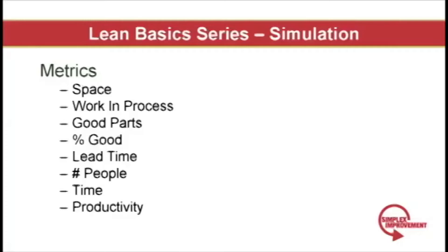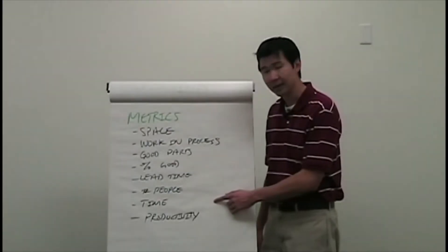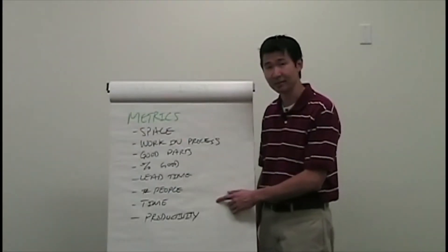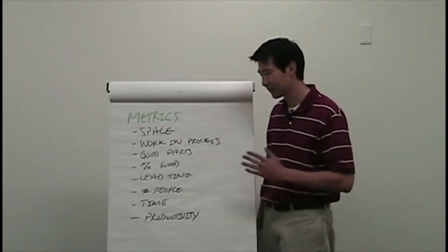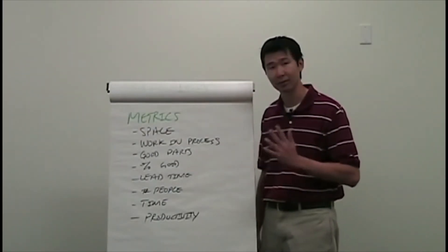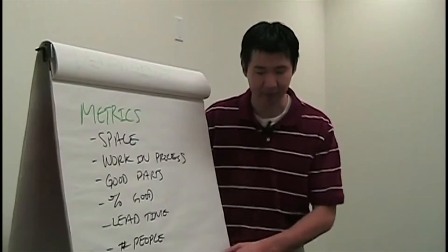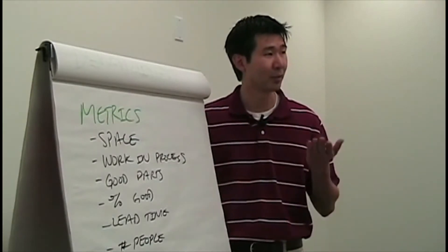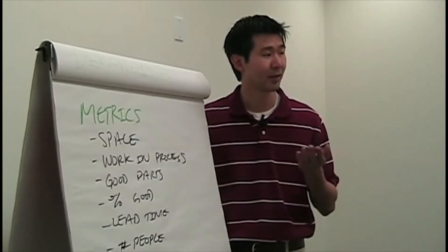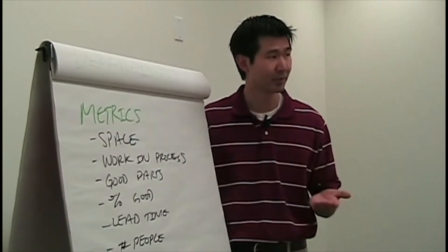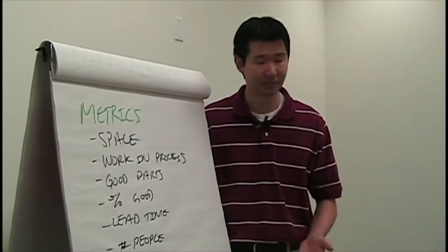Then we have number of people. We start off with six, but as the simulation goes on, they learn to decrease that number. Next, there's time — all these simulations are going to run for five minutes. And last, we have productivity, which is a measure of good parts divided by people divided by time.